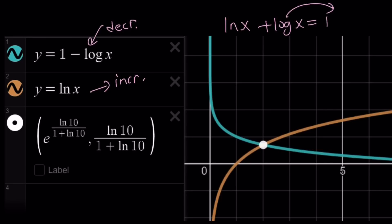You can see them. The x value is e to the power ln 10 over 1 plus ln 10. Of course, if you replace e to the power ln 10 with 10, you can get a different version of the solution. And it's basically going to give you the solutions.